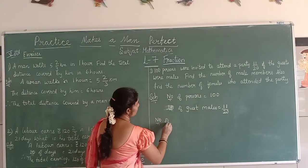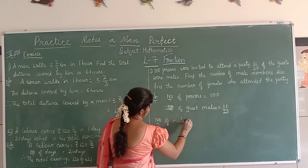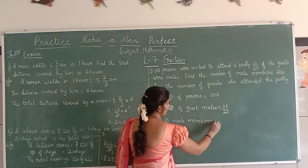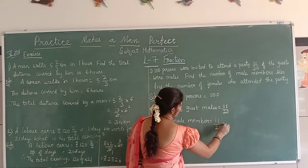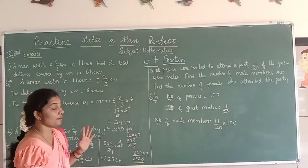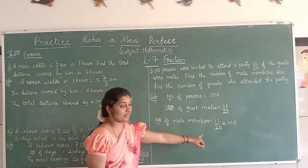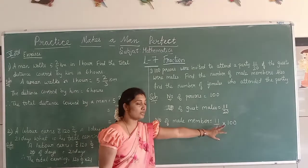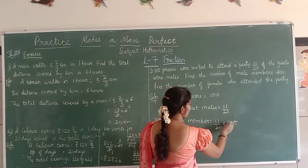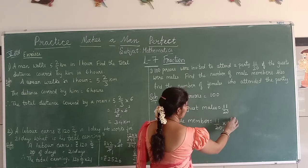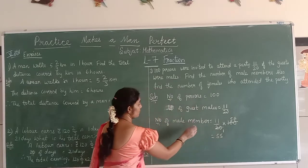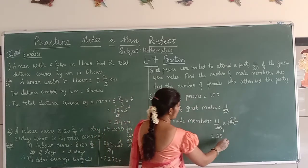First I find number of female members. So it is 11/20 into 100. 11/20 of the guests were maids. Cancel 20 and 100, so 11 times 5 equals 55. The number of female maids is 55.